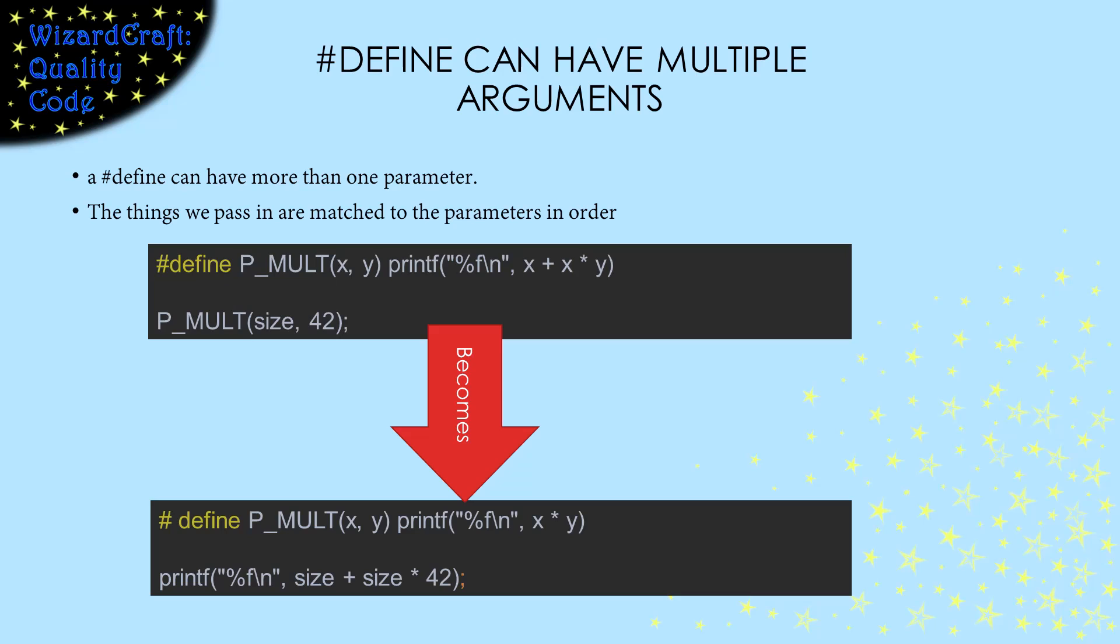We can have more than one of these string replacement kinds of parameters. In this example, I defined pmult to print out a function of two values. The values that I pass in replace the parameters in the order we pass them in. So when I pass in size and 42, size replaces both of the x's in the replacement string, and 42 replaces the y.